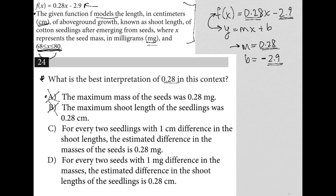Hmm, I don't think so. The 0.28 I believe has to do with length, because this entire function is about length. This is all about above ground growth. Only the x value is about the mass. So crossing C out for that reason. Choice D: for every two seeds with one milligram difference in the masses, the estimated difference in the shoot lengths of the seedlings is 0.28 centimeters. That's my answer.